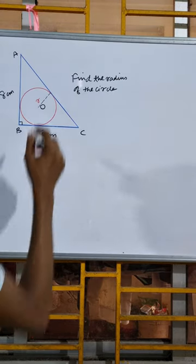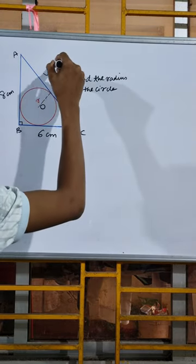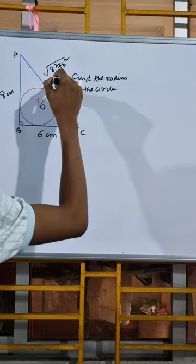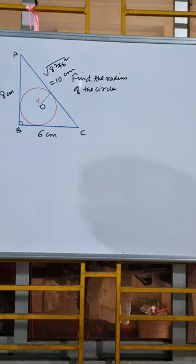So first let us find the hypotenuse which is square root of 8 squared plus 6 squared, which will give us 10 cm. So 10 cm is the hypotenuse.